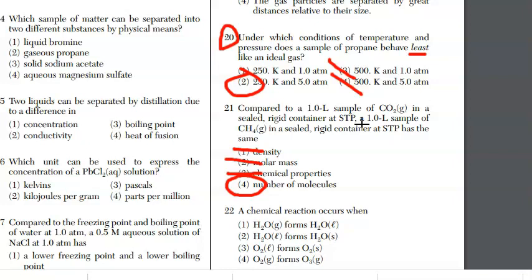For 22, chemical reaction occurs when you have to break bonds and form new bonds, new substances, new formulas. Choices one, two, and three are all just phase changes. Only choice four, going from O2 to O3, that is a change in the chemical structure, so it is a chemical reaction.